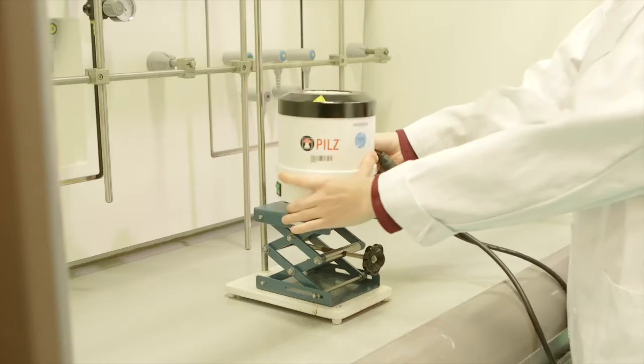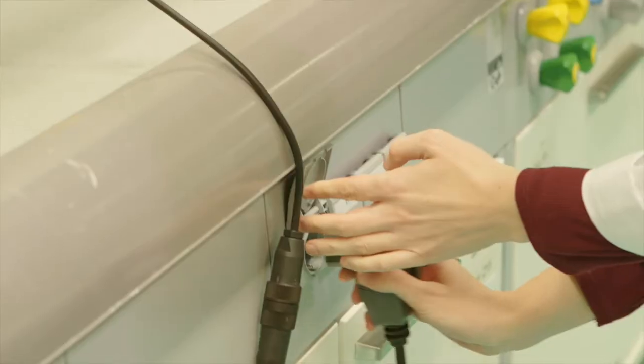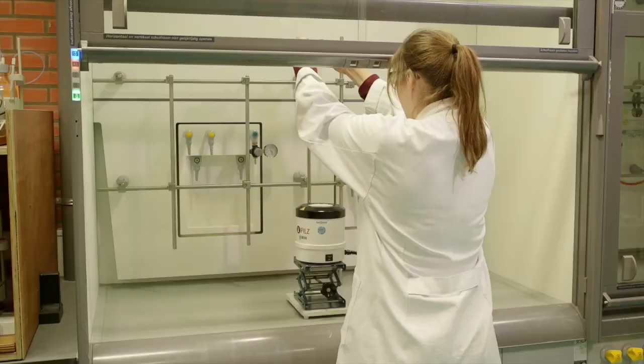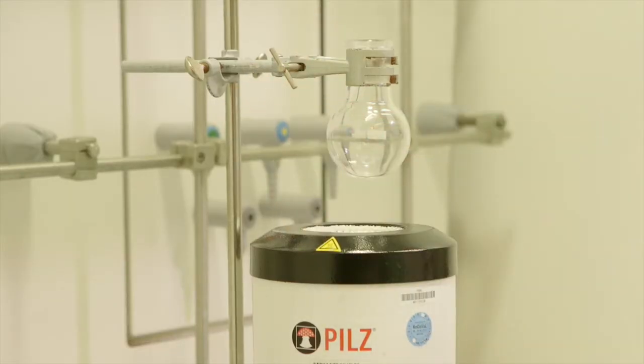Raise the jack and place the isomantle on it, and stab the plug into the socket. Attach a clamp to the stand and hang the round bottom flask in it. Make sure the clamp rests in the holder.